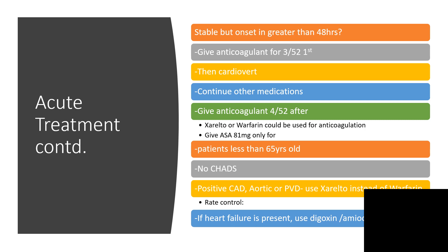If the patient is stable but the onset is greater than 48 hours, then something will have to change. We have to give anticoagulant for three good weeks first, then cardiovert, and after that continue on the medications — give your anticoagulant again.